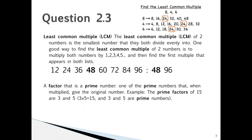Question 2.3: The least common multiple or LCM of 2 numbers is the smallest number that they both divide evenly into. One good way to find the least common multiple of 2 numbers is to multiply both numbers by 1, 2, 3, 4 or 5, and then find the first multiple that appears in both lists.